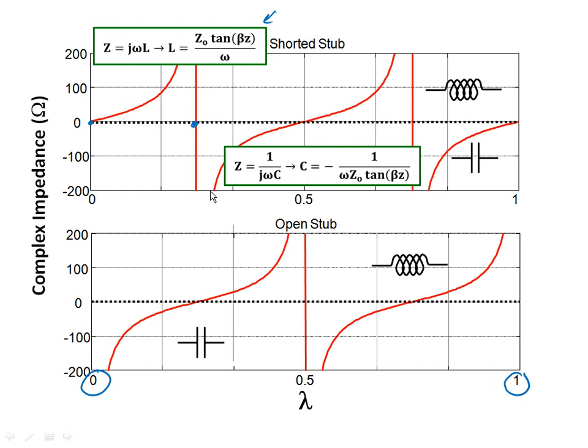Well, we know that the impedance of an inductor is j omega l, and thus we do some simple algebra, and we can find that in certain cases, the transmission line shorted stub, depending on length, acts like an inductor. So everything above this dashed line right here is inductance. So if the red line, which is the impedance of the stub, is above the dashed line, then your transmission line is going to act like an inductor.